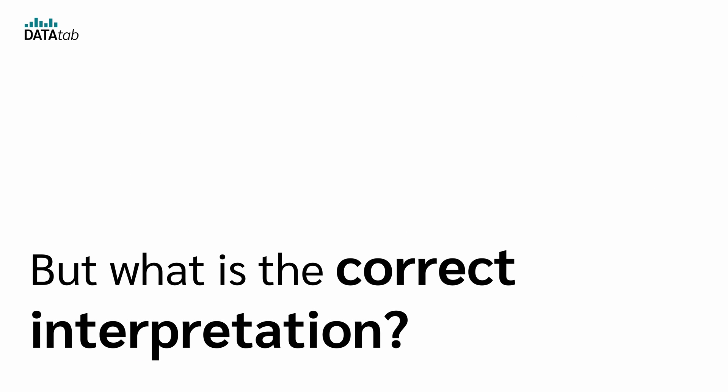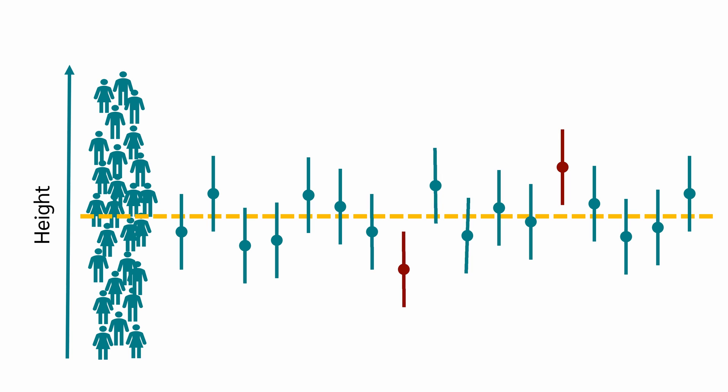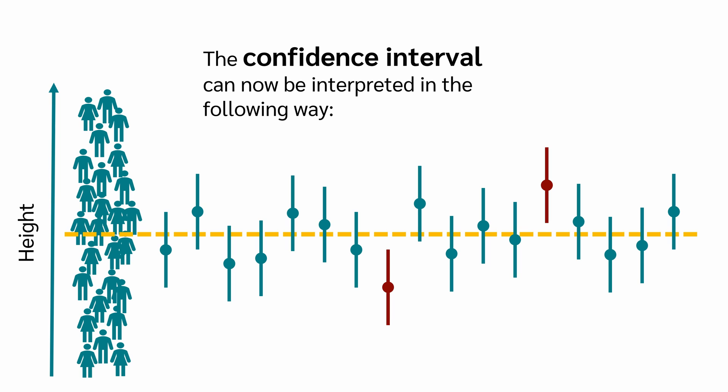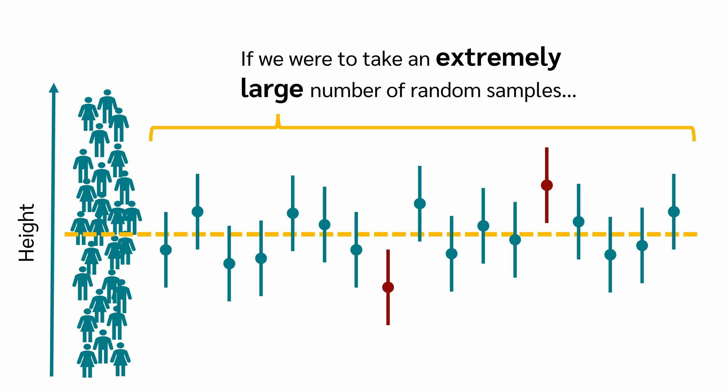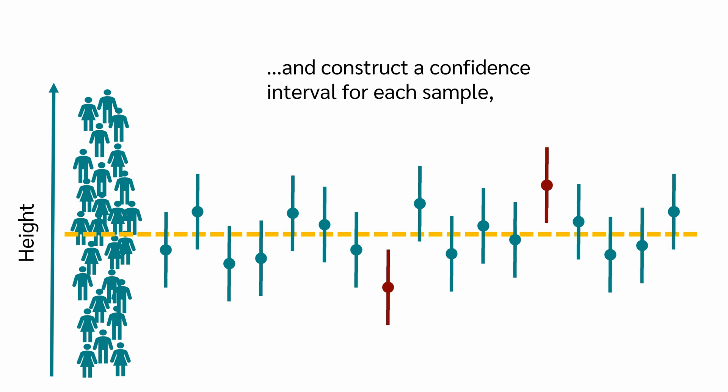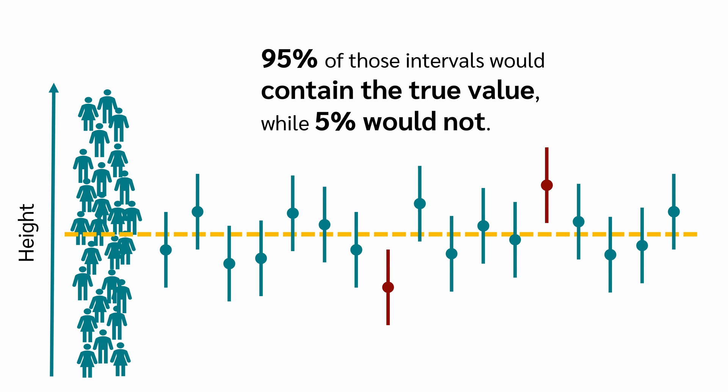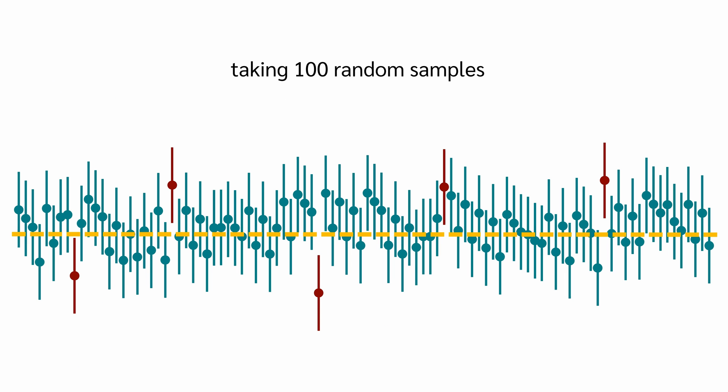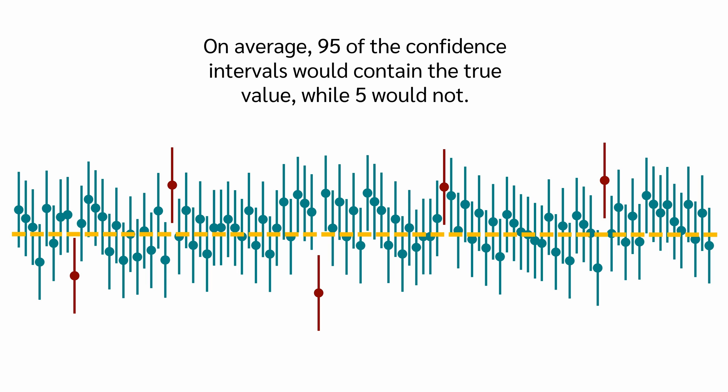But what is the correct interpretation? Let's say we took a lot of random samples and we calculated the mean value and the confidence interval of each sample. The confidence interval can now be interpreted in the following way: If we were to take an extremely large number of random samples and construct a confidence interval for each sample, 95% of those intervals would contain the true value, while 5% would not. In other words, if we were to take 100 random samples, we would expect that on average 95% of the confidence intervals would contain the true value, while 5% would not.